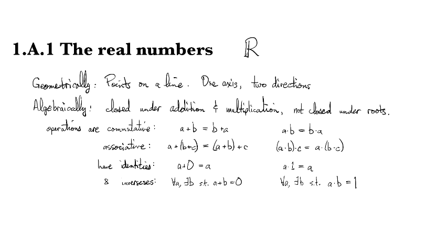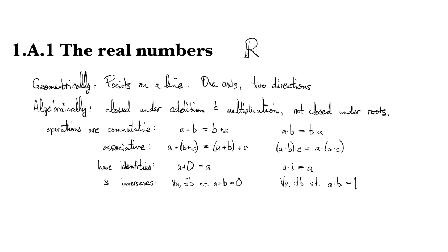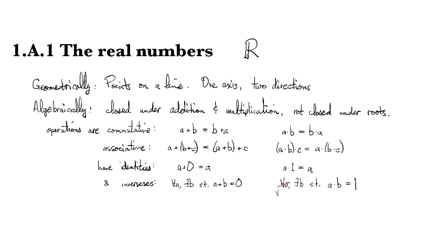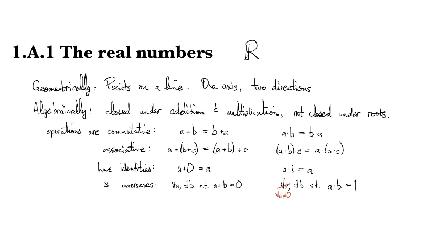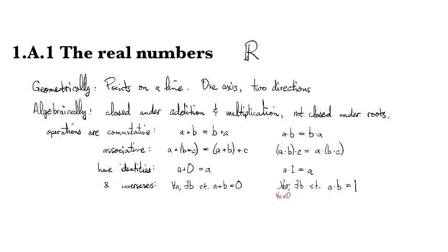There's a little quirk - it's not totally exactly completely true that it's for all a. It's only true for all a that are non-zero. We have this one special element, the additive identity, for which there's an exemption on that rule.